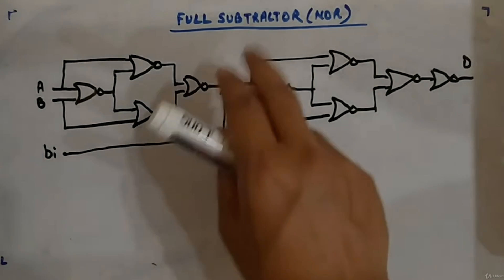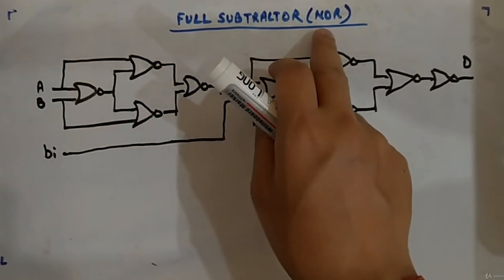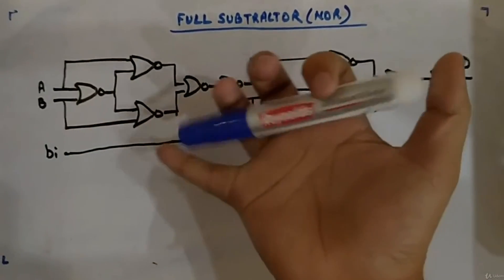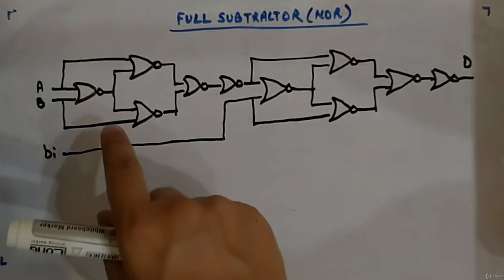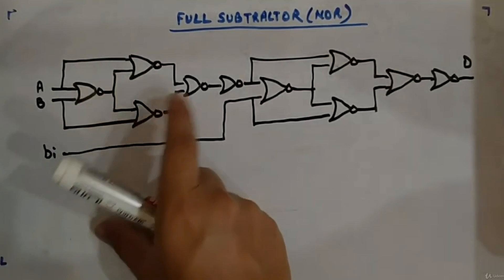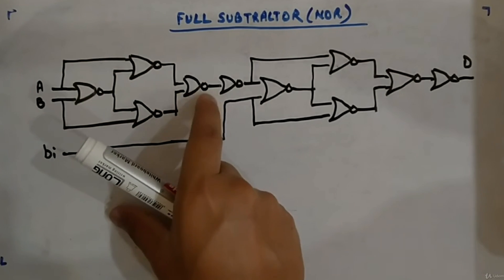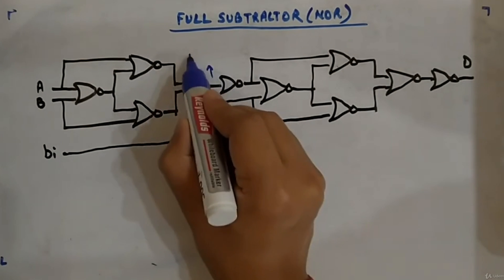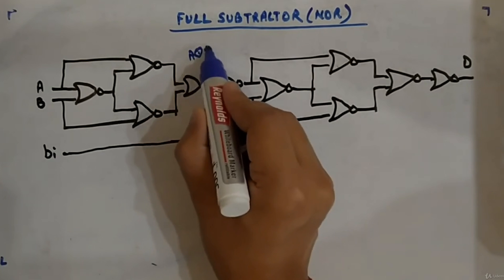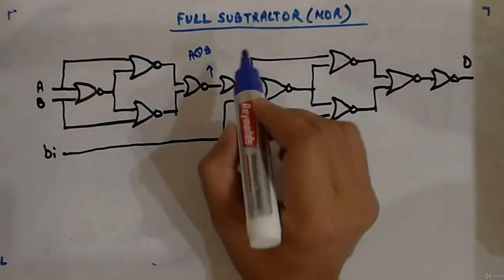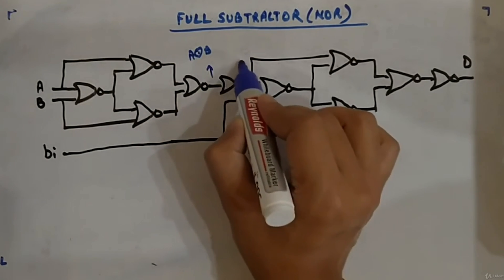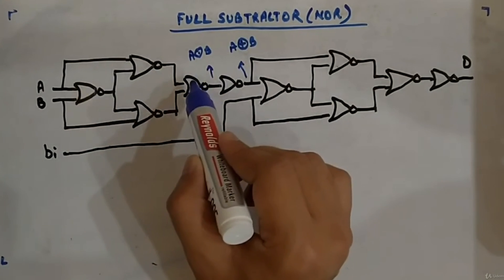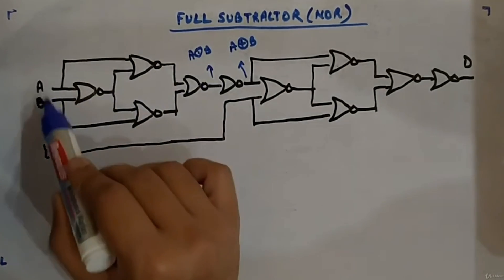Let's design the full subtractor using NOR gates. This is similar to what we did in the full adder case. This four-gate arrangement will give you A XNOR B at this point. If you pass it through a NOT gate, what you will have is A XOR B. So this four-gate arrangement gives the XNOR output of the two inputs.